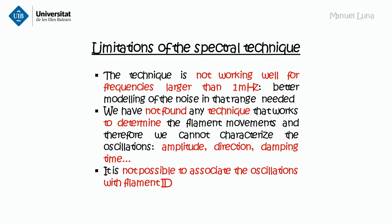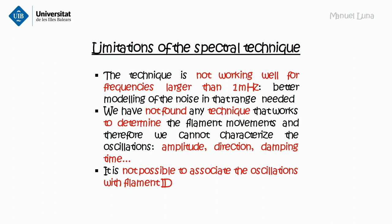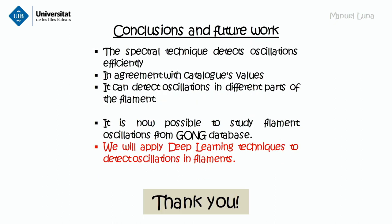Limitations: the technique is not working well for frequencies larger than 1 mHz — it's necessary to have better modeling in this range of frequencies. We have not found any technique to determine the filament velocity, the direction of the motion, the velocity, the amplitude, or the damping time. Also, if we apply this to the full dataset, we cannot associate the oscillation with any specific filament. The idea then is to apply deep learning techniques.